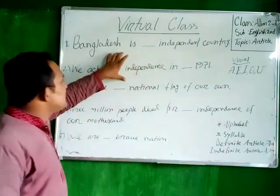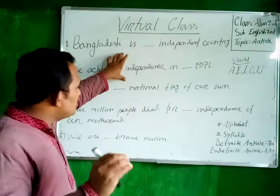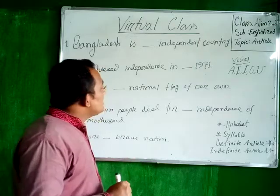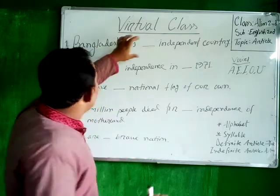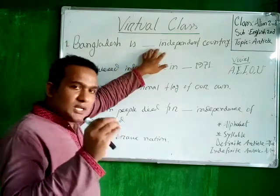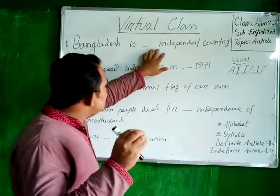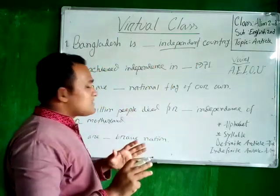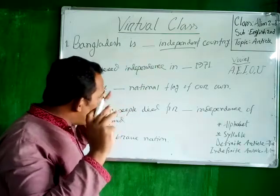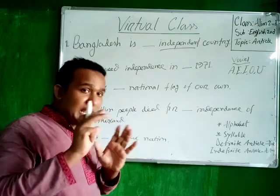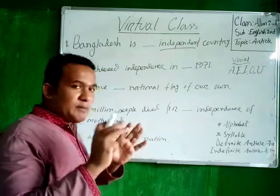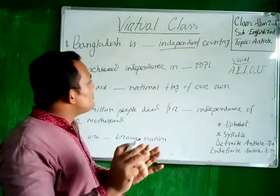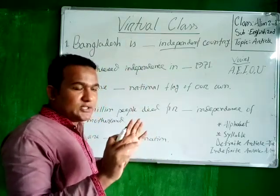In terms of using articles, we have to know the sounds of a particular or given word. If you want to fill in the blank, we have to know the sound of the word. If we find a vowel sound, we have to put 'an'. When we find a consonant sound, we have to put 'a'.